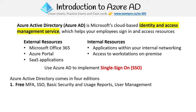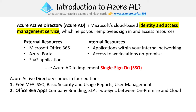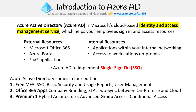Azure Active Directory comes in four editions. The free tier has MFA, SSO, basic security usage reports and user management. Then you have the Office 365 Apps tier, which revolves around using that suite — company branding and SLA sync between on-premise and cloud. Then the premium tiers, which really come into enterprise or on-premise hybrid architecture — so hybrid architectures, advanced group access, conditional access, and for Premium P2 identity protection and identity governance. One thing to note is that you can't create custom access controls unless you have Premium P1 or P2.